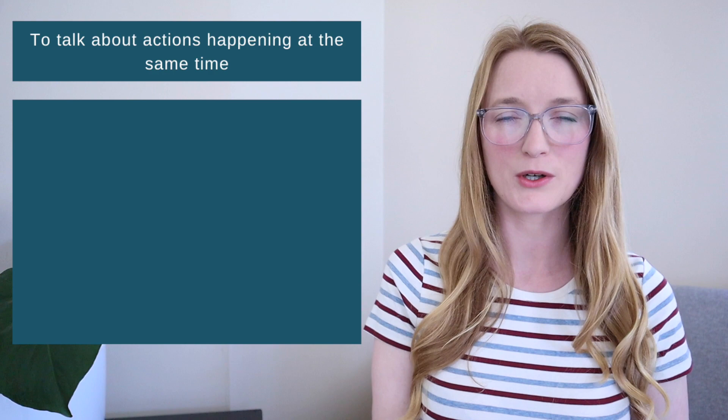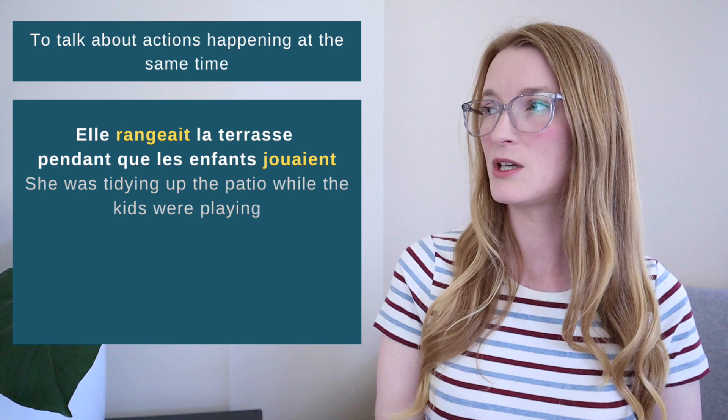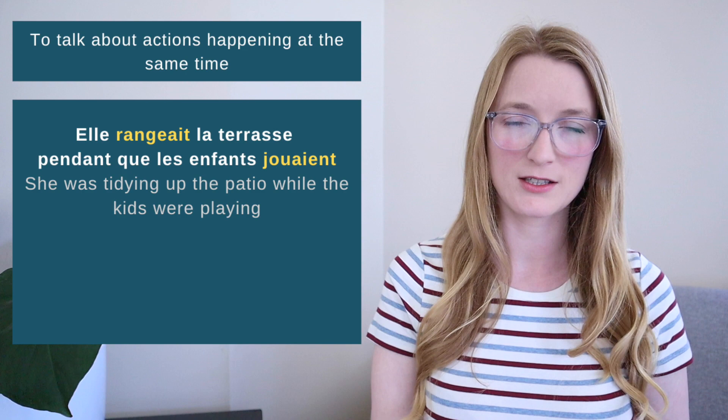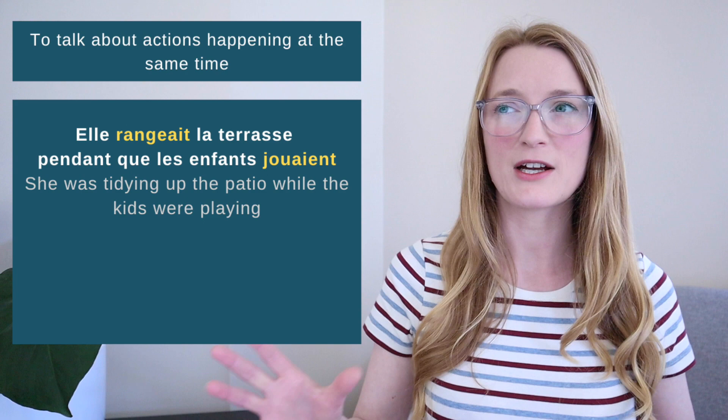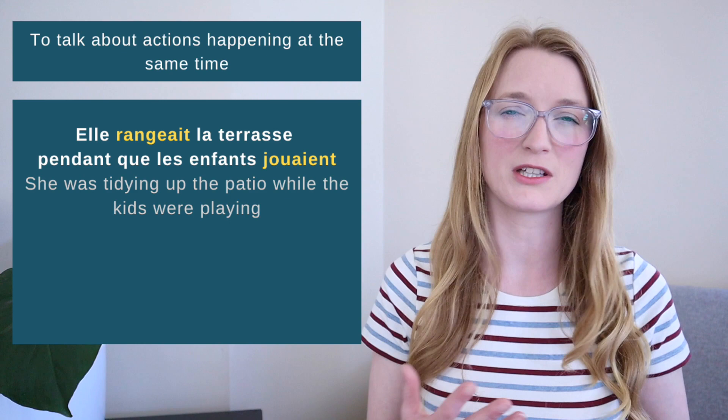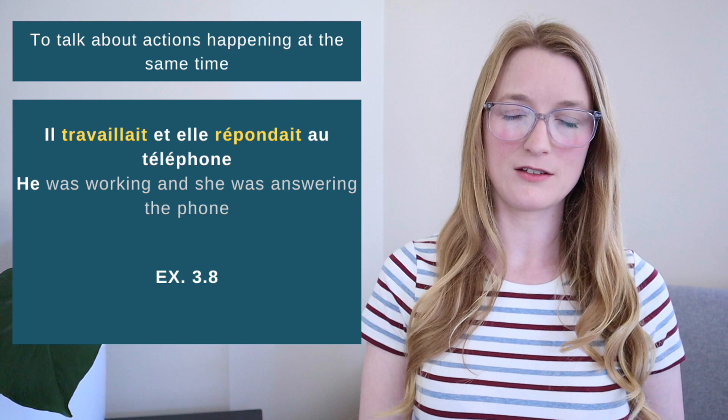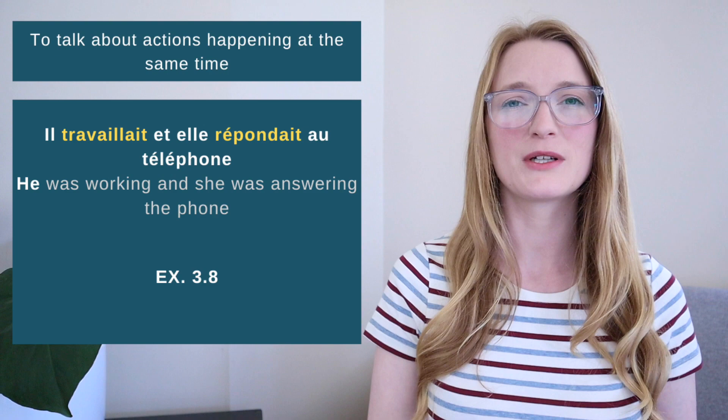We also use the imparfait to talk about actions happening at the same time, without a specific time frame. For example: 'Elle rangeait la terrasse pendant que les enfants jouaient' — she was tidying up the patio while the kids were playing. Both actions happened at the same time and were both ongoing; we don't really know how long. Another example: 'Il travaillait et elle répondait au téléphone' — he was working and she was answering the phone.